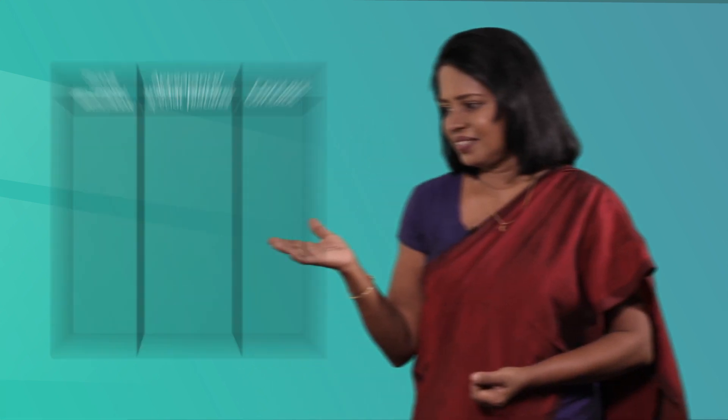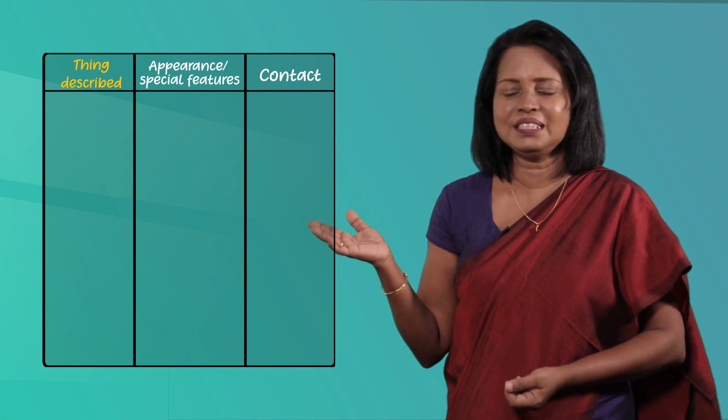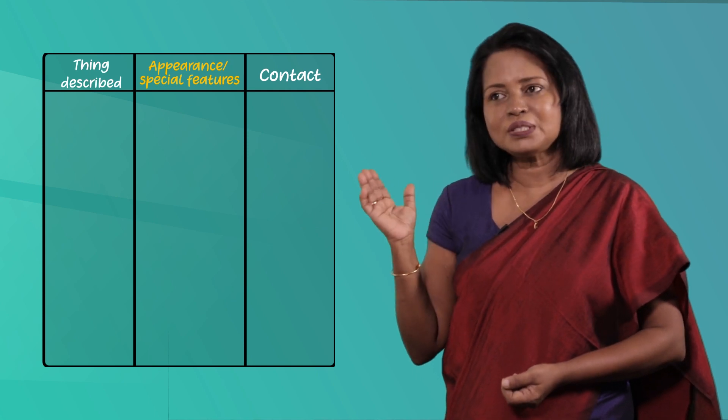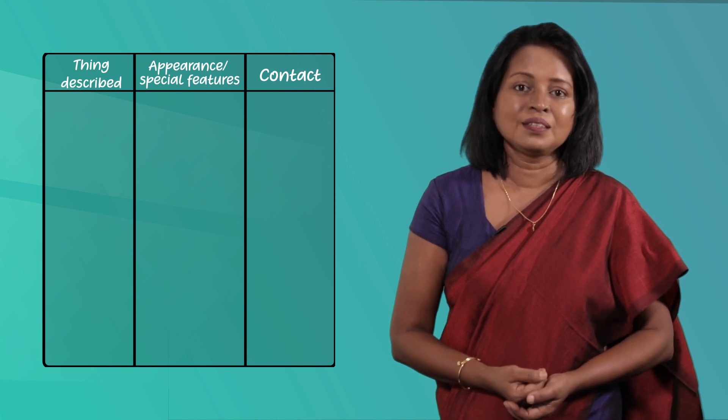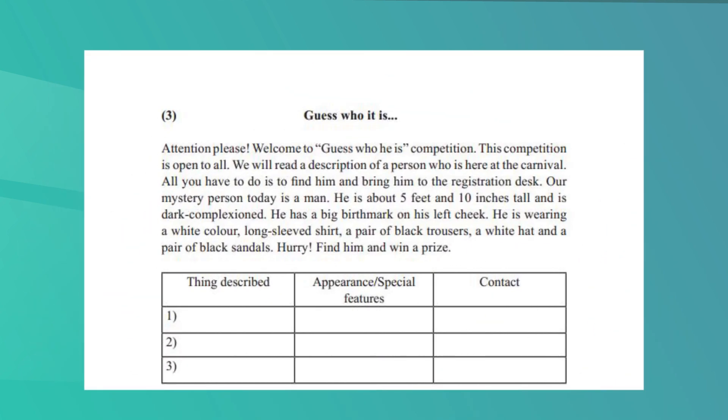Okay children, now you have read two notices and found specific information and transferred it into a grid. Now we are going to do something different — you are going to read an announcement about a person who has gone missing. It's a hidden stranger competition. You have to read this and find information about the person to fill into a grid: the thing or person missing, their appearance, and whom or where to contact. Here is the announcement.